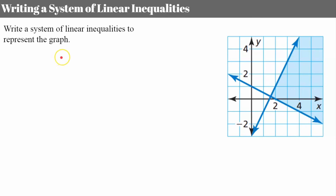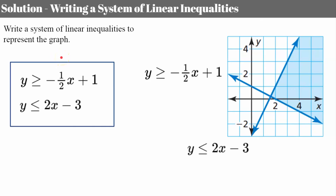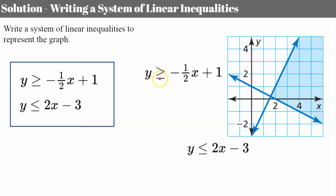Welcome back. Here we have a solid line, so we know we'll have an equal to. It passes through the y-axis at a y-intercept of 1, with a slope of rise negative 1 over run 2 — so a slope of negative one-half. It's shaded above, so I know it's going to be greater than or equal to.